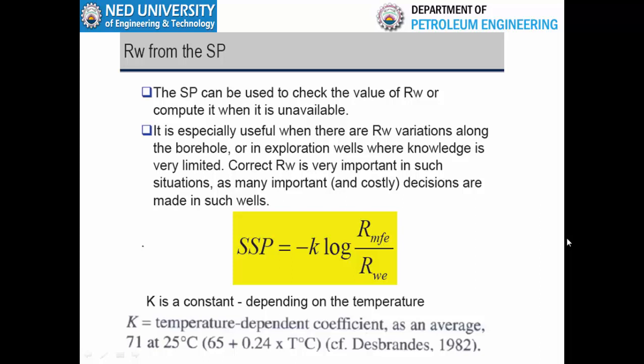Whenever we have deflection from the shale baseline, whether the deflection is on the left side or on the right side, it will indicate that the zone is a permeable zone. Whether the deflection is on the left side or right side depends on the difference of salinity between the mud and the formation water.